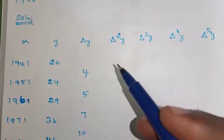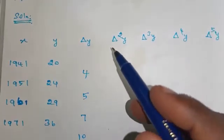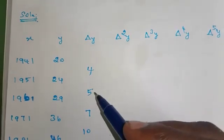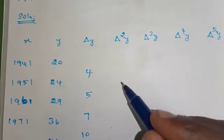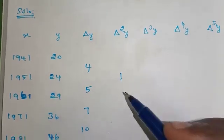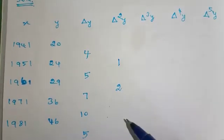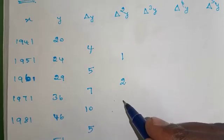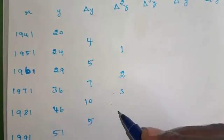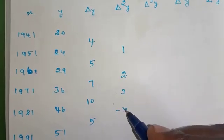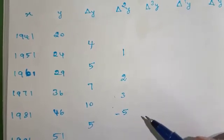Next we will find Δ²y. Δ²y means: 5 minus 4 = 1; 7 minus 5 = 2; 10 minus 7 = 3; 5 minus 10 = minus 5.